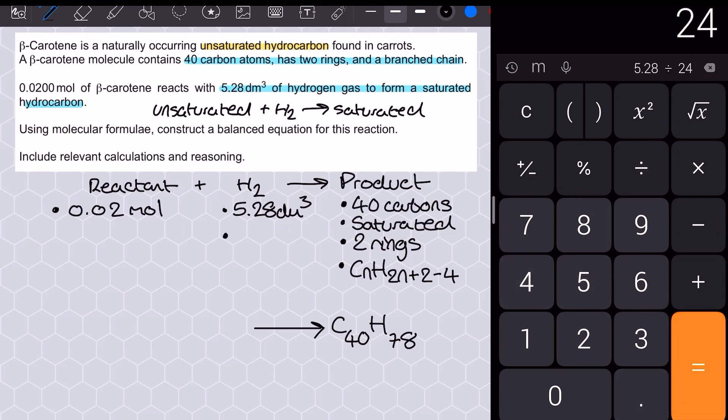Assuming it's at room temperature and pressure, I'm going to use 24 decimetres cubed as my molar gas volume, and I get a value of 0.22 mole for the hydrogen.